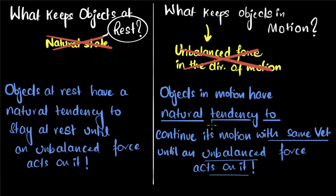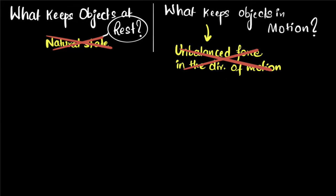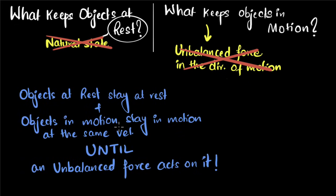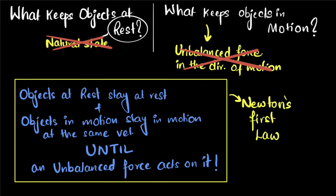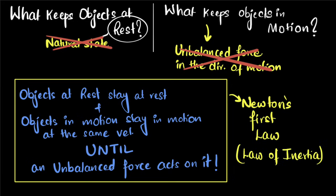Now if we put these two together, we get: objects at rest stay at rest, and objects in motion stay in motion at the same velocity, until an unbalanced force acts on them. This is what we call Newton's first law. You don't need an unbalanced force to keep things in motion — and this natural tendency of objects to continue whatever they're doing is what we call inertia. Therefore, the first law is also called the law of inertia.